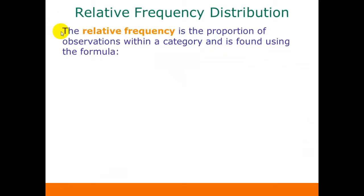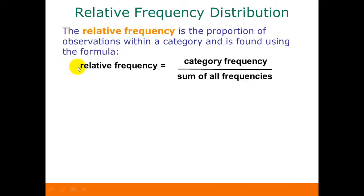Another type of table we can create is a relative frequency distribution. The relative frequency, instead of being the count of how many values are in each category, is the proportion of values within each category. To find the relative frequency for a specific category, we take the frequency for that category and divide it by the sum of all the frequencies — in other words, the total number of observations in our data set.